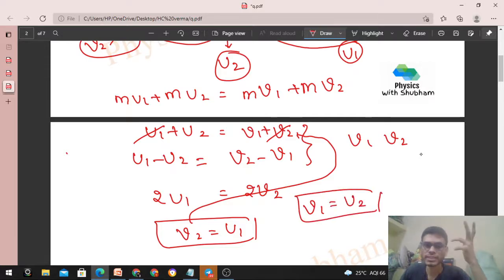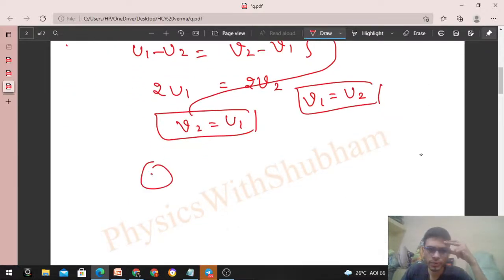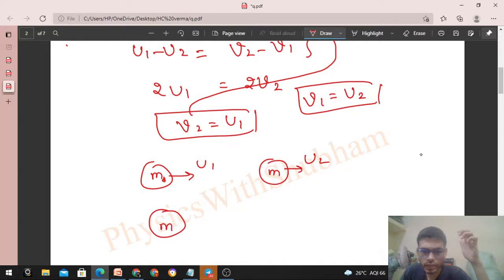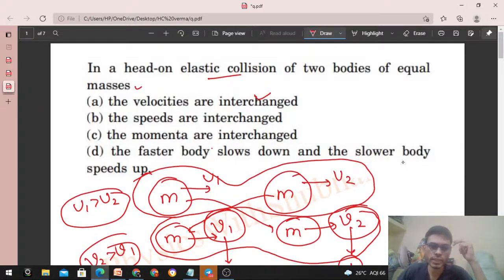You can see the velocity is exchanged, right? As I said before, the body behind was initially moving with U1 and the body ahead was moving with U2. Finally what happens? The body behind starts moving with V1, and V1's velocity is U2. The body ahead starts moving with V2, but V2 is equal to U1. So in this way the velocities are exchanged.